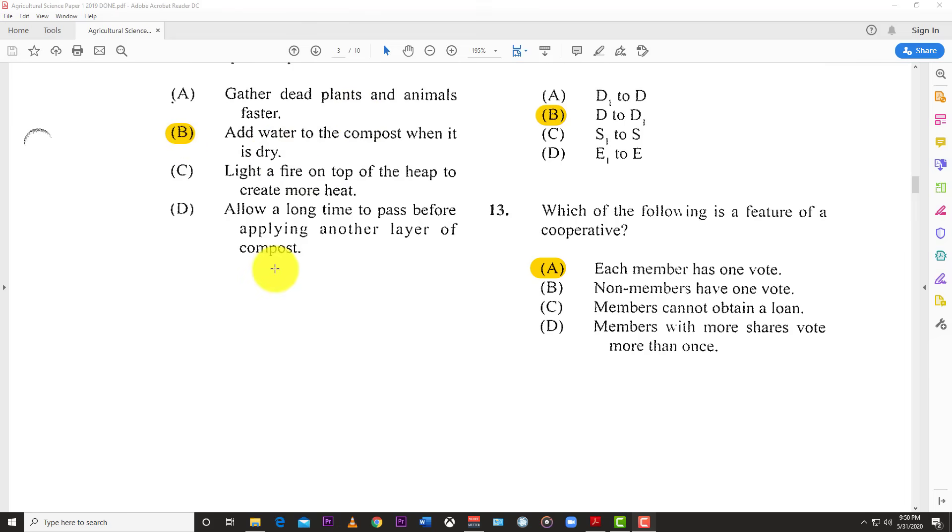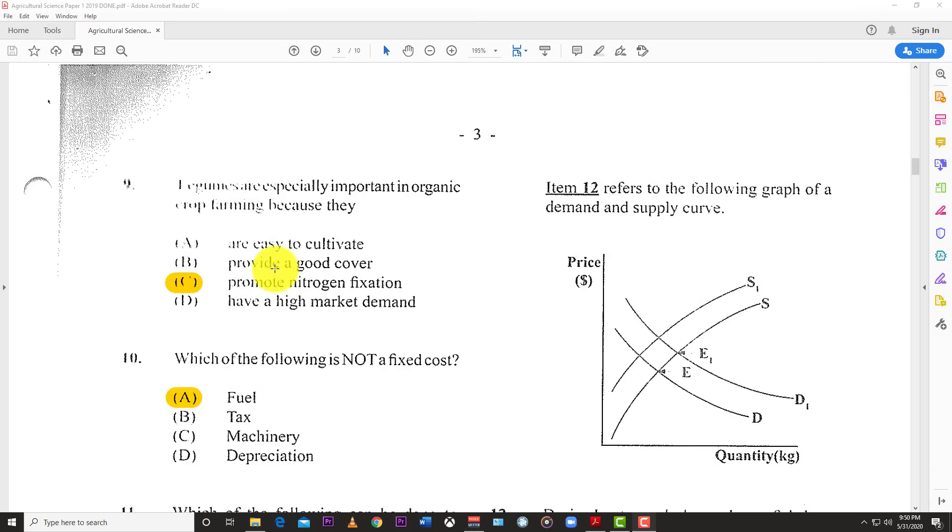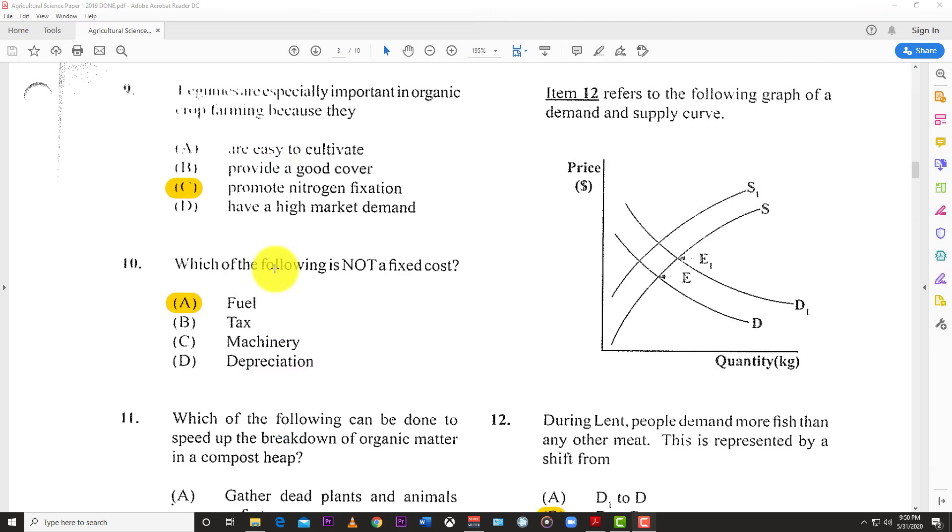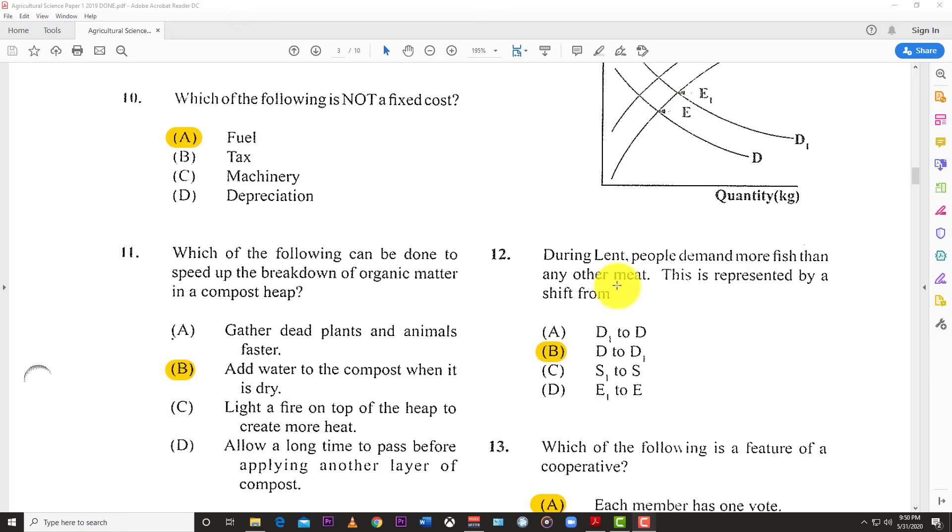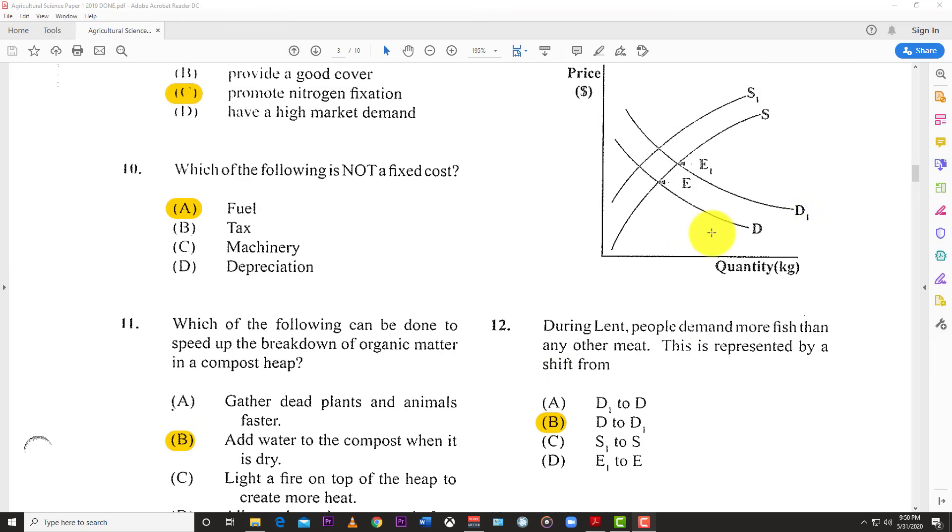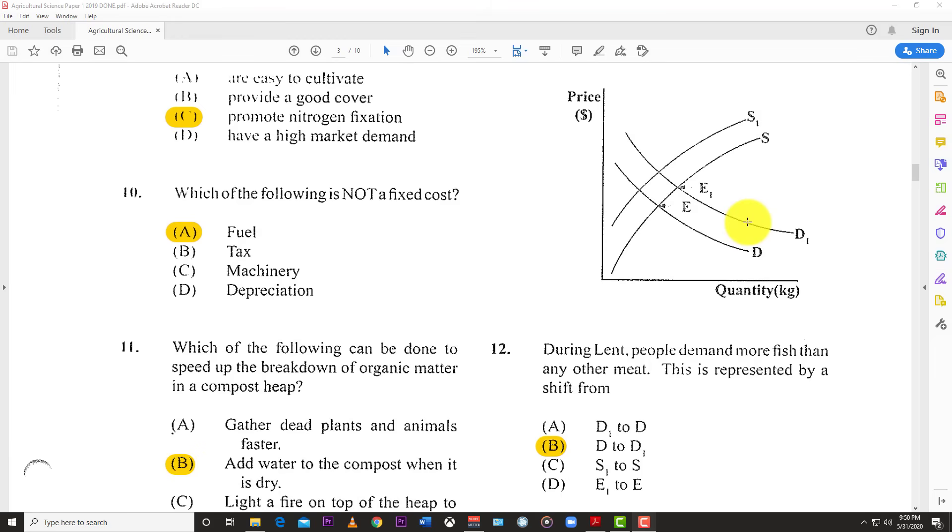Number 11: Which of the following can be done to speed up the breakdown of organic matter in a compost? The answer is add water to the compost when it is dry. You have to keep it moist - bacteria need moist conditions to break down the products.